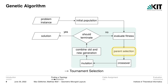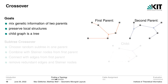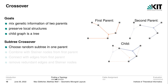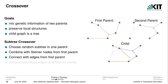The next step is crossover, where we mix the genetic information of two parents with the goal of recombining the good parts of different solutions. To achieve this we want to ensure that our crossover method can preserve local structures and that the child graph is a tree. What we use is subtree crossover, a new method which chooses a random subtree in one parent, combines it with Steiner nodes from the first parent, and connects the vertices to form a spanning tree using edges from the first parent. We then remove redundant edges and Steiner nodes to obtain a feasible tree solution.